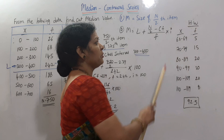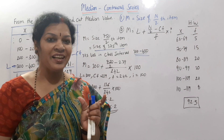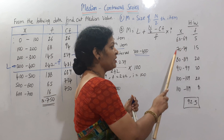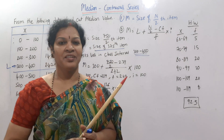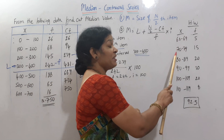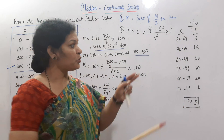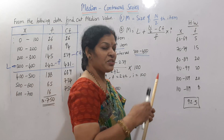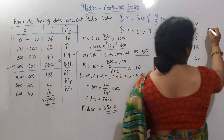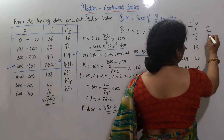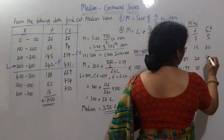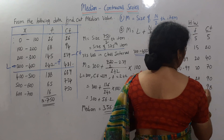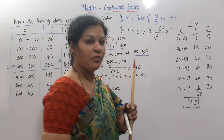Now for the homework problem: the twist here is that class intervals are not given in the usual format. Instead of 60–70, 70–80, they are given as 60–69, 70–79, 80–89, and so on. First, prepare the cumulative frequency as usual. CF values are: 5, 20, 40, 70, 90, 98. Total n = 98.